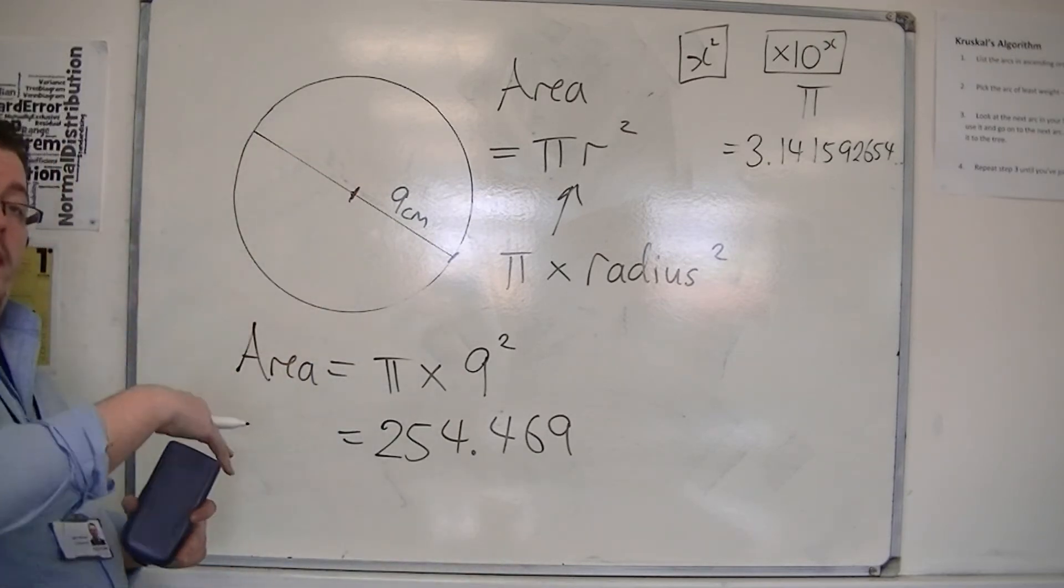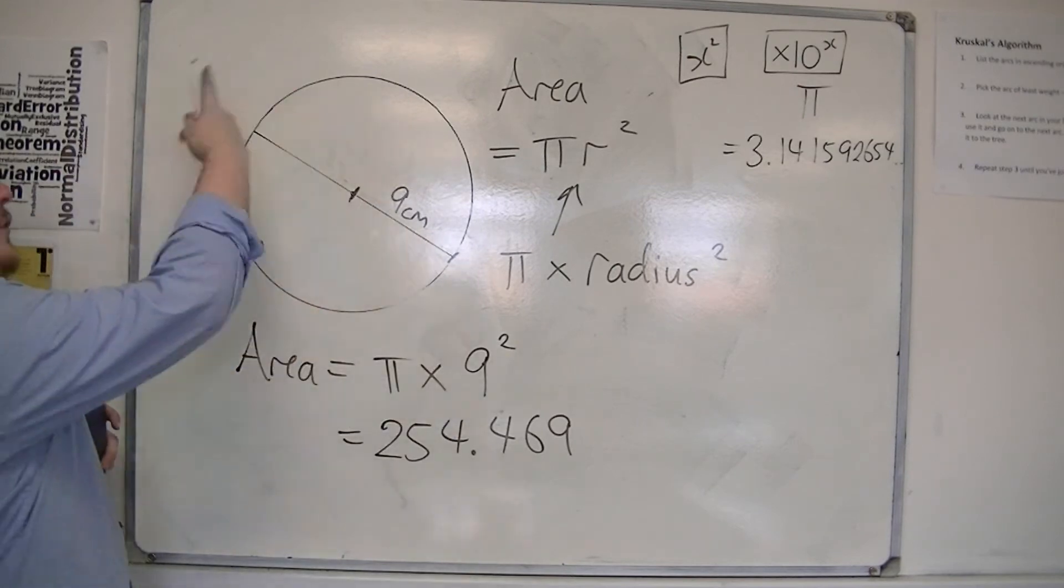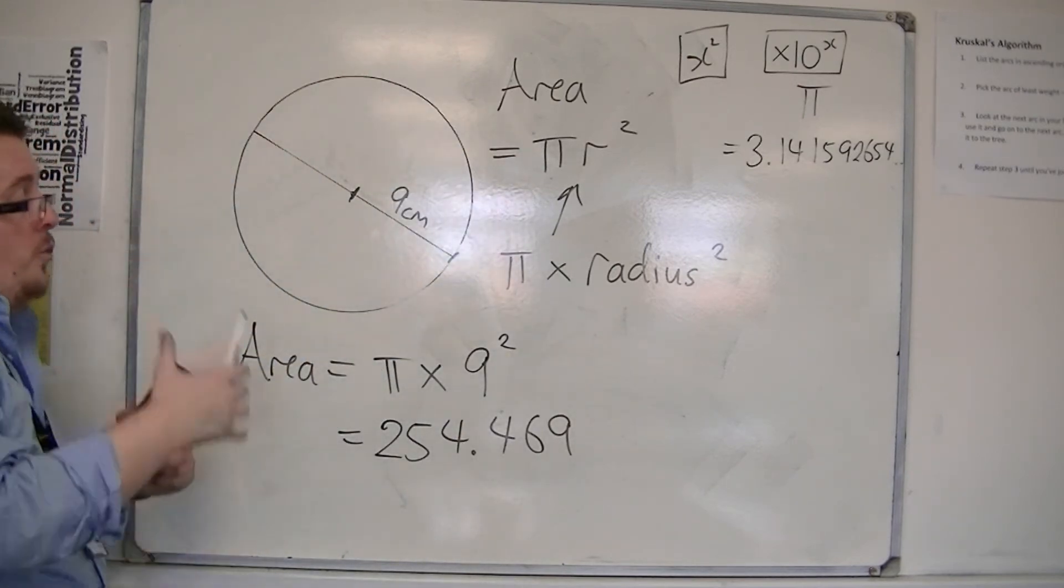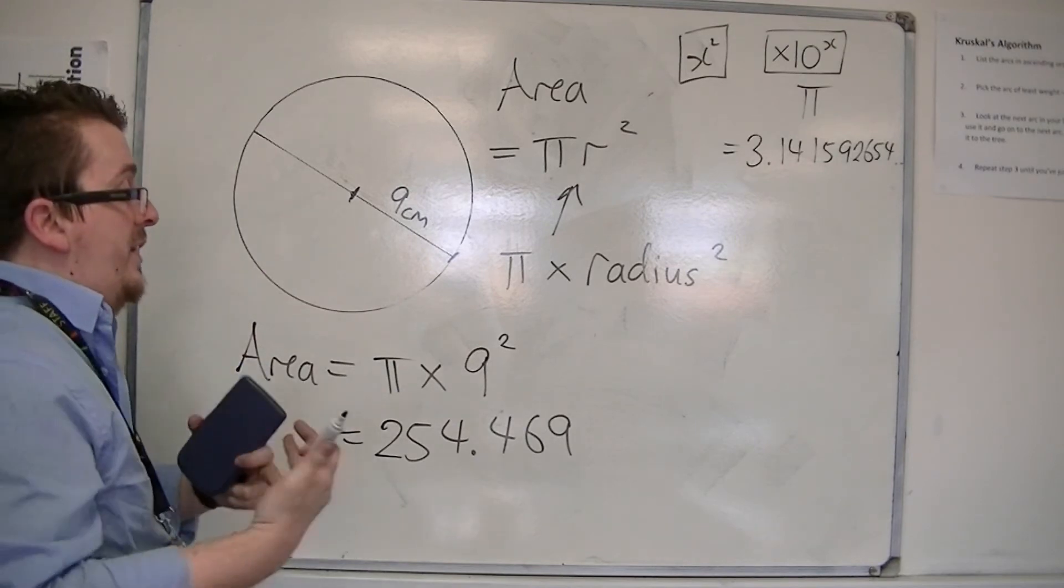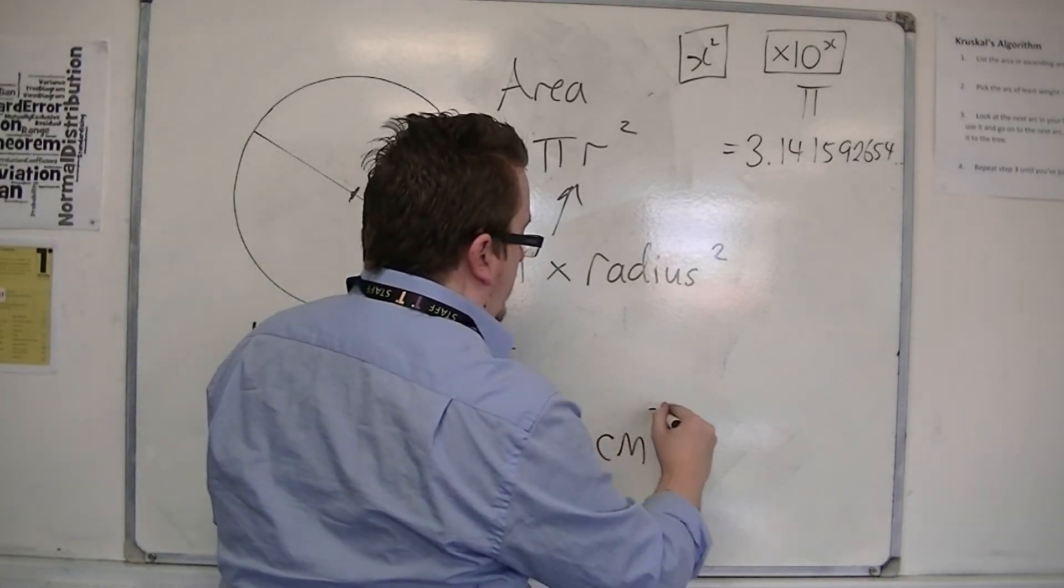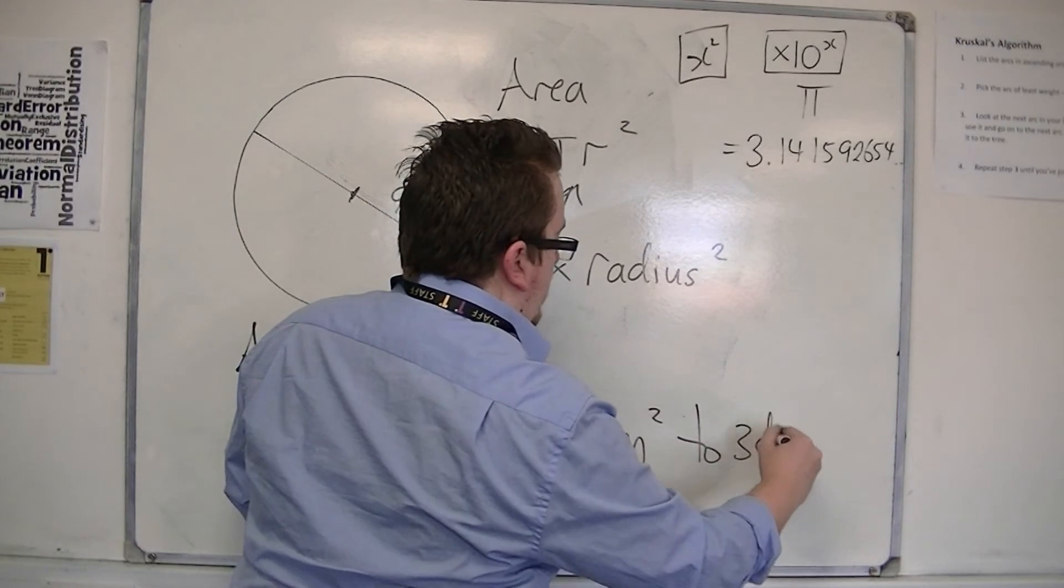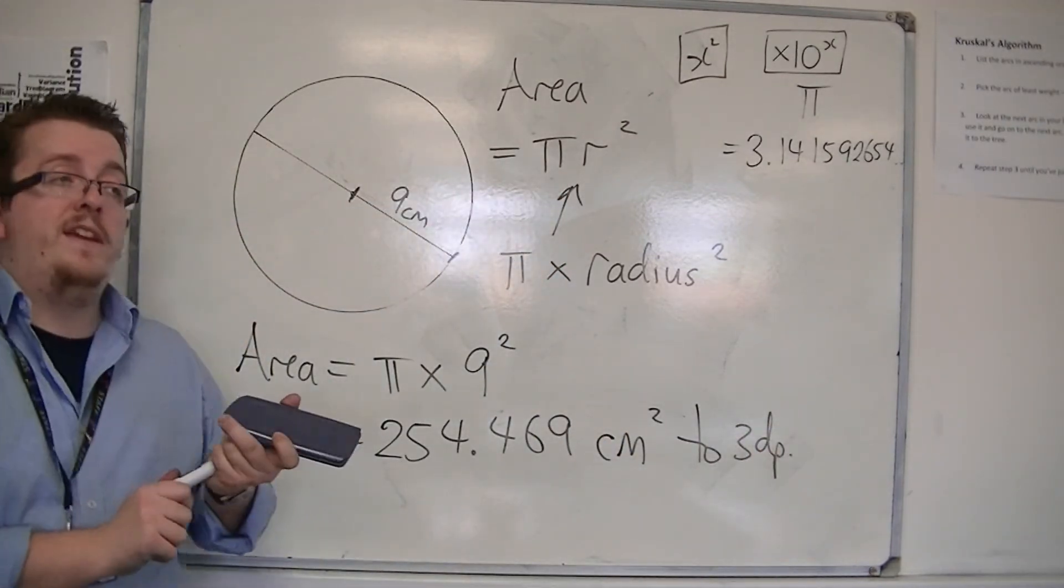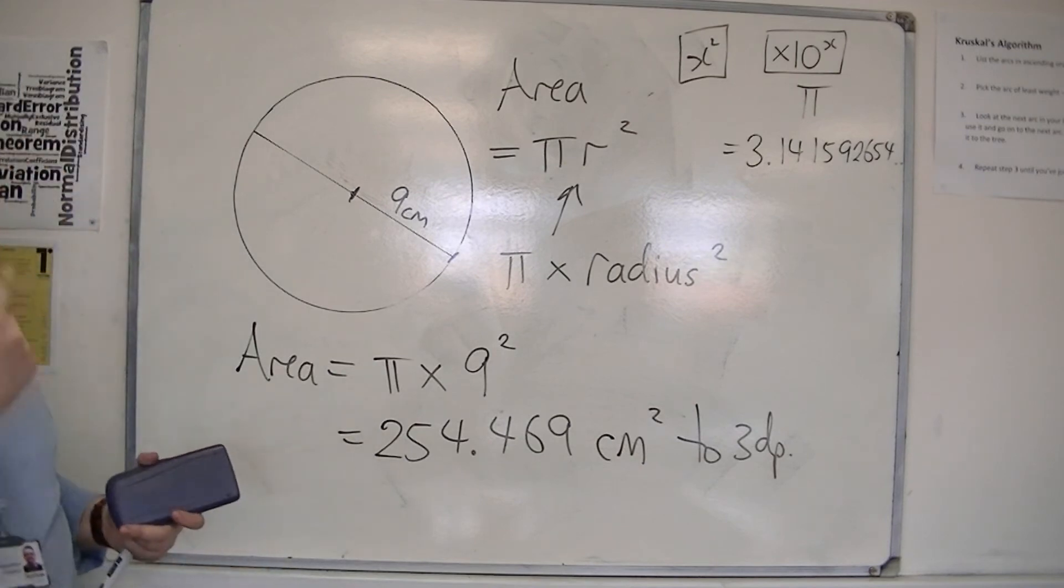Now, units-wise, beforehand, because we're looking at circumference, it was looking at a length, so centimeters. But for area, you'll be looking at centimeters squared, to three decimal places. So the unit now is centimeters squared because we're looking at area, while circumference is a length, so we just look at centimeters.